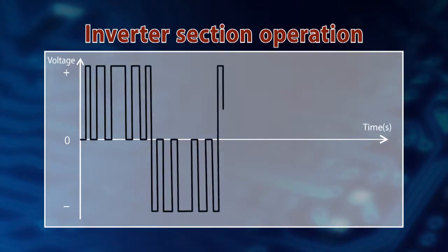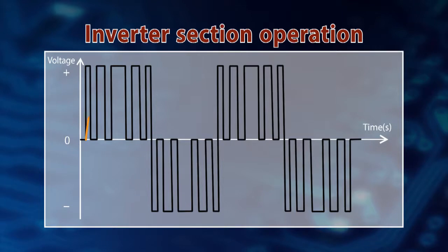Next, the inverter section converts the DC power supply to a pulse-like pseudo-alternating current.